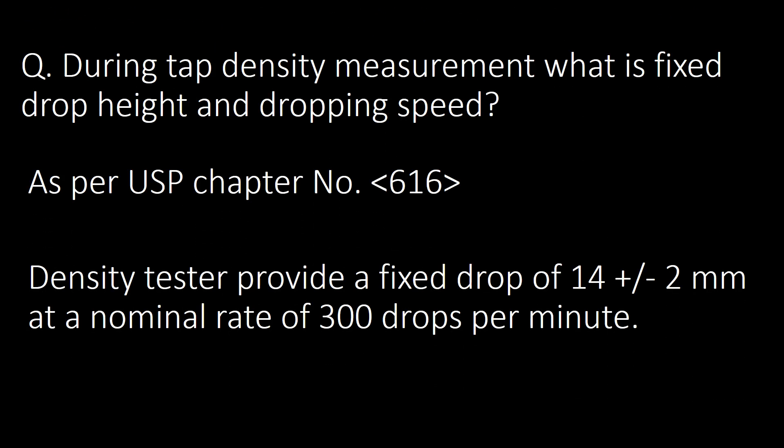During tap density measurement, what is the fixed drop height and dropping speed? As per USP chapter 616, density testers provide a fixed drop of 14 ± 2 mm at a nominal rate of 300 drops per minute.